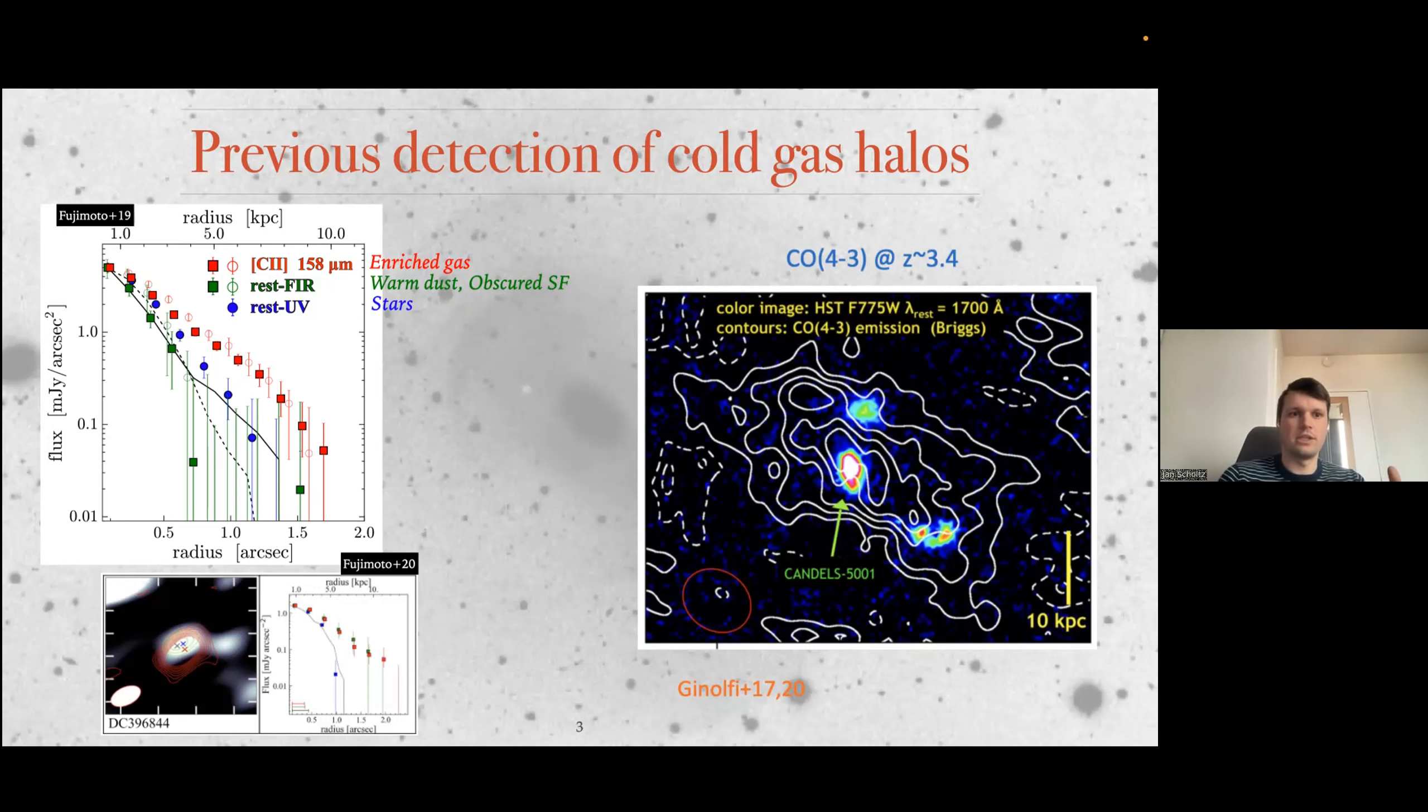So it's not very good at figuring out exactly what phase of gas it traces. But you can see on these plots, which are basically the radial profiles, that the C2 tends to be more resolved than the stars from HST or the warm dust from the continuum in far infrared. The thing is that all of these are star-forming galaxies. However, the question is, should we see them around AGNs and quasars?